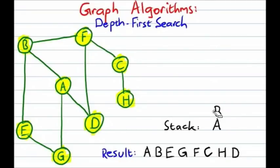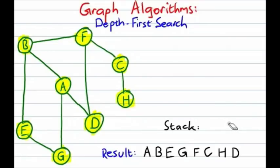From B, there's no place new to go, so we pop it off the stack, which returns us to A. Since we've seen everything connected to A, A gets popped off the stack as well. Now our stack is empty, which means that our traversal is complete.